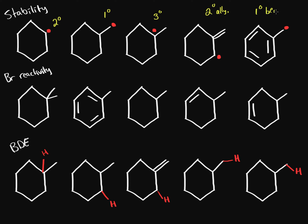Then we have a primary on a benzene ring — not a benzene radical, but a benzylic radical, so this is a primary benzylic. The most stable ones are those with resonance. The benzylic has almost four resonance forms, making it the most stable. The secondary allylic is second. Tertiary provides more electron density to the radical than secondary, so tertiary is third, secondary is fourth, and primary is fifth.